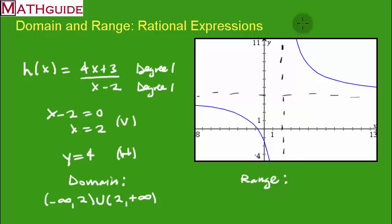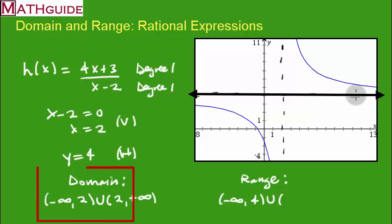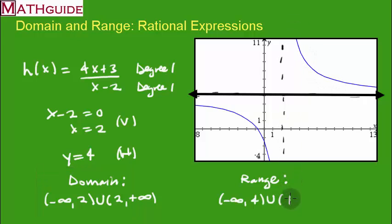For the range, we look at the two branches vertically. The lower branch comes from negative infinity up toward y equals 4, approaching but never reaching it. The upper branch starts just above 4 and goes to positive infinity. There you have the domain and range for this example.